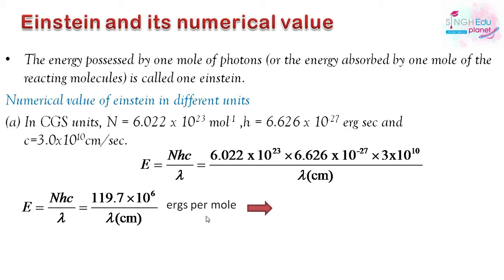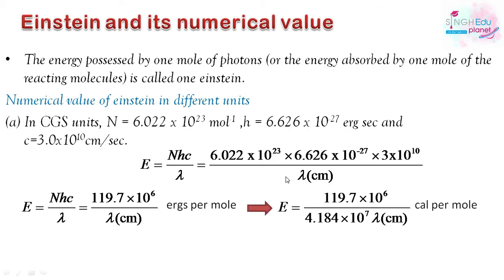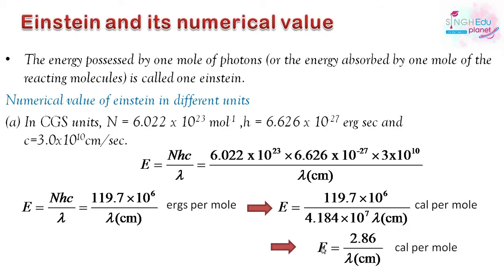To convert ergs per mole to calories per mole, we use 1 calorie = 4.184 × 10⁷ ergs, and divide accordingly. Solving this gives the expression E = 2.86/λ (in centimeters) calories per mole. So we can find the energy expression in calories per mole.